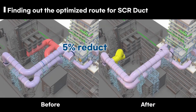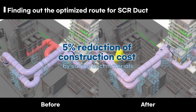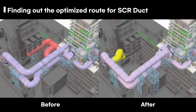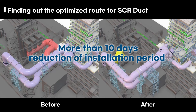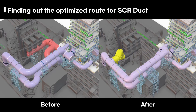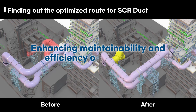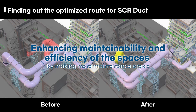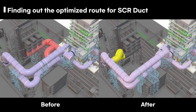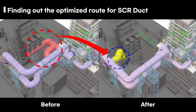Additionally, we reduced 5% of construction costs and more than 10 days of the construction period by saving construction materials and optimizing duct routes. We also enhanced maintainability and got efficiency of the spaces by making more maintenance areas. All of these were achieved by finding optimized duct routes from the sulfur absorption facilities to the SCR facility.